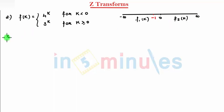So, now, we need to find ZT of this. So, z of f of k, that is equal to, summation k equal to minus infinity to infinity, z raise to minus k into f of k. So, that comes as,